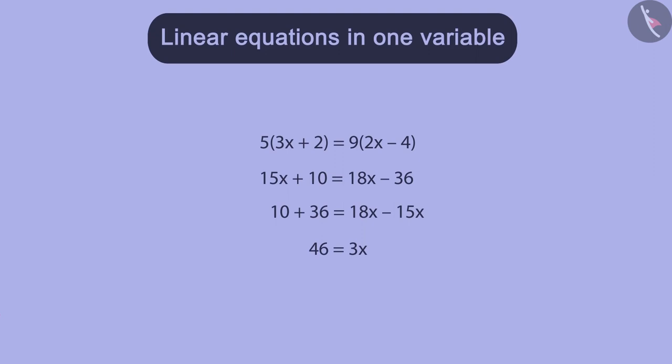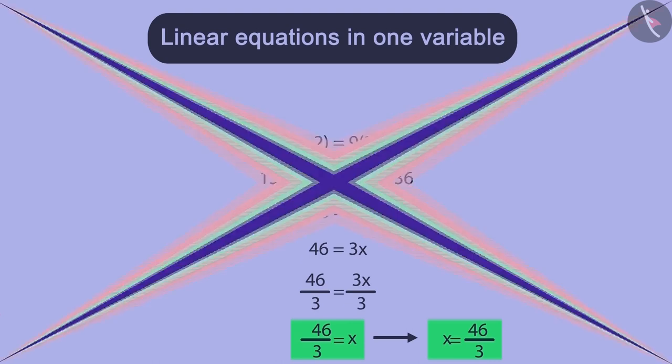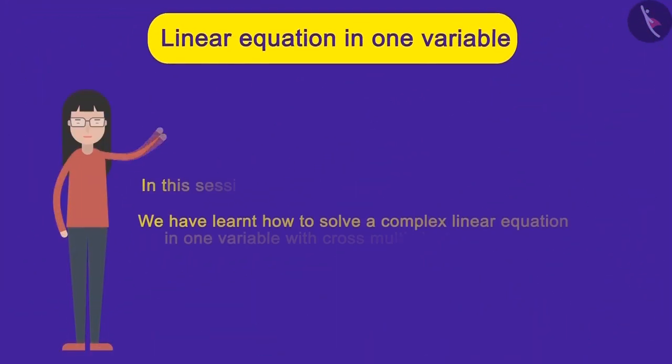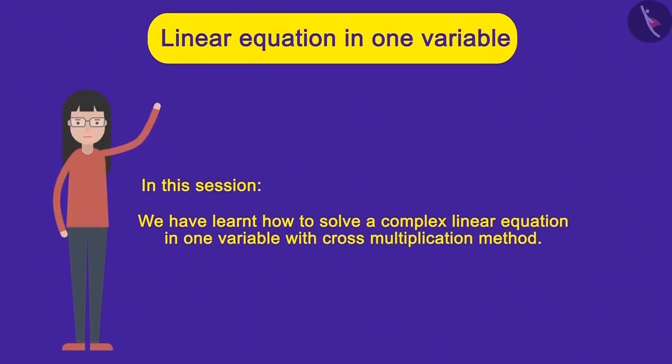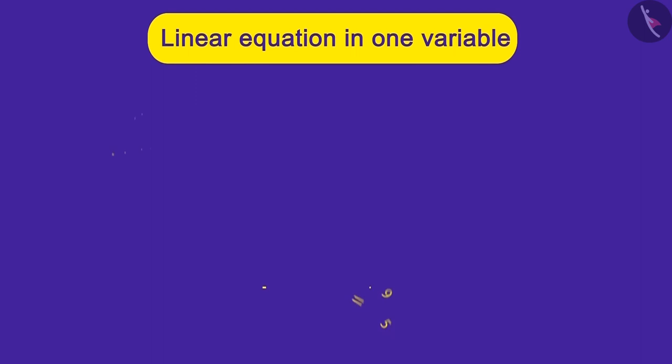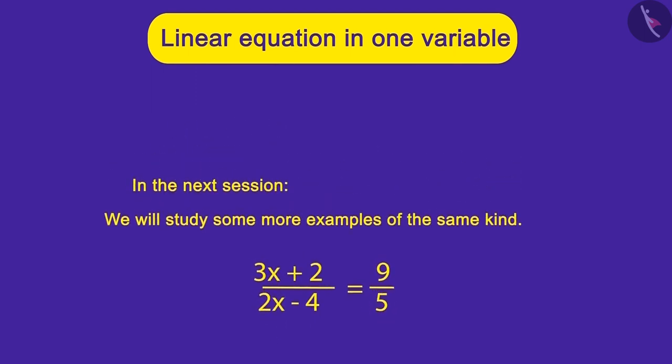Now, we have to divide both sides by 3. And this way, we find the value of x is equal to 46 by 3. So, in this session, we saw how cross multiplication helps to solve complex linear equations in one variable. In the next session, we will see some more interesting examples to understand this concept better.